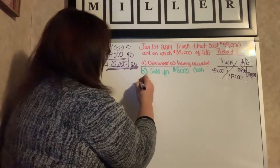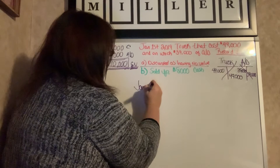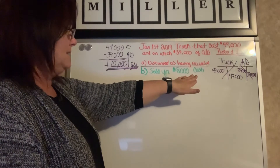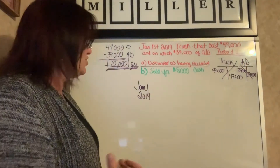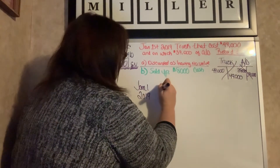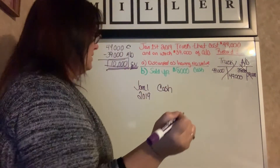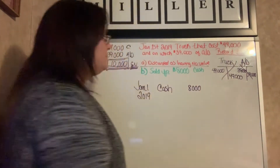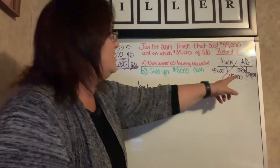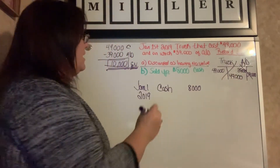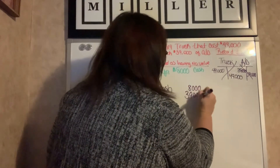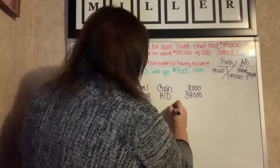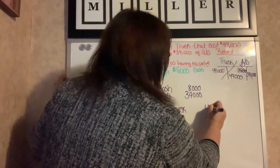We still have the same information here regarding January 1st, 2019. Cash is an asset, therefore when we receive cash — cash coming in — that is a debit, and it is always listed first because it is the most liquid asset that we have. So cash, we received $8,000. Then we still have to do the same journal entries: we have $39,000 of accumulated depreciation, and then we have our truck worth $49,000, so we have to get rid of that.